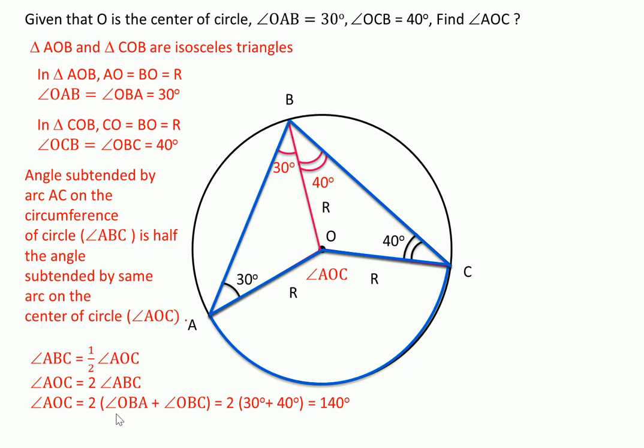So AOC is now twice of 30 degrees plus 40 degrees, so twice of 70 degrees is 140 degrees. Hence the angle AOC is 140 degrees.